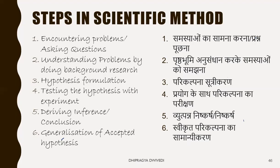Science is a way by which we acquire knowledge. The process form of science is a way by which we acquire knowledge, and the process form of science is always more important than the product form.